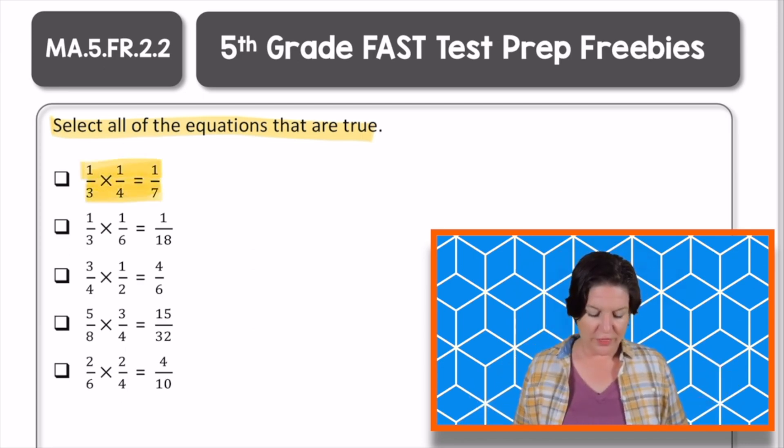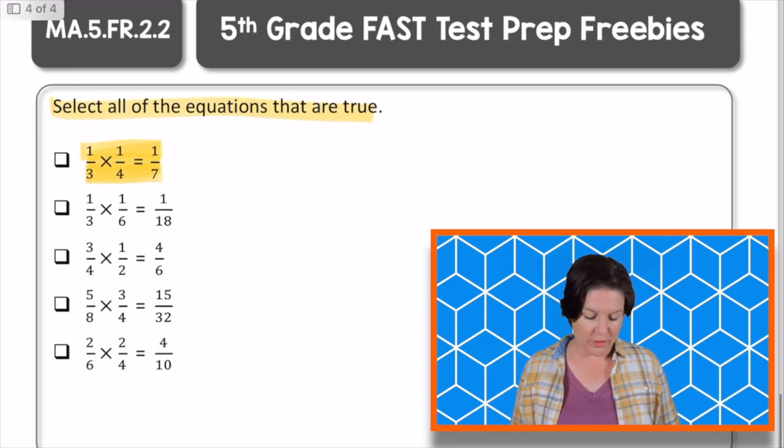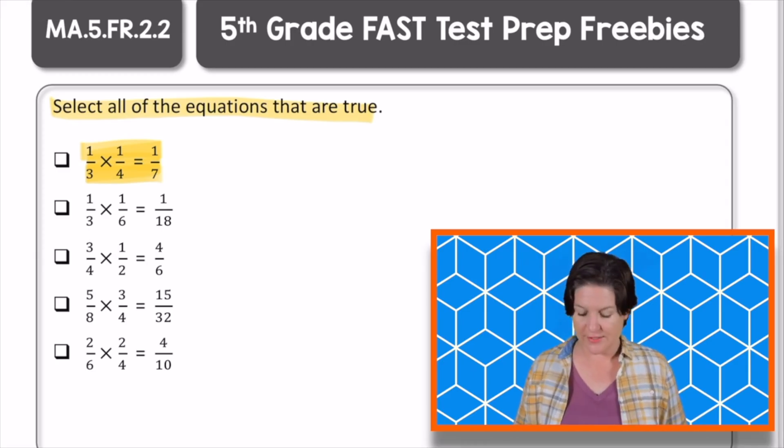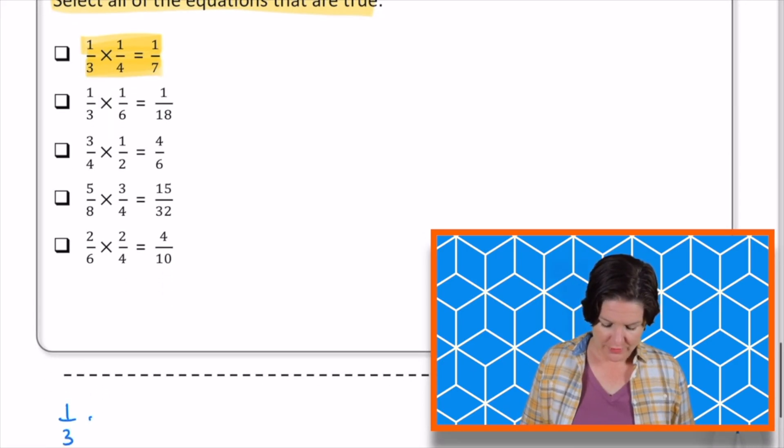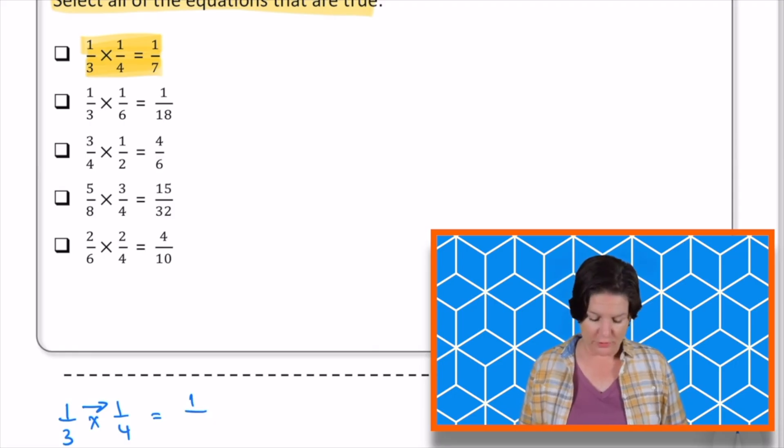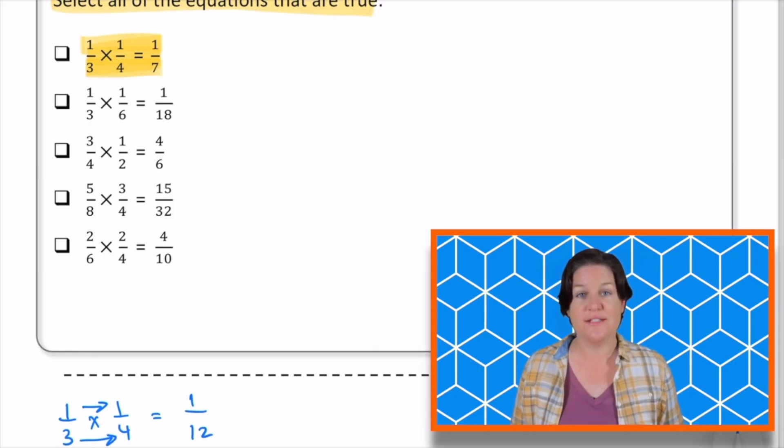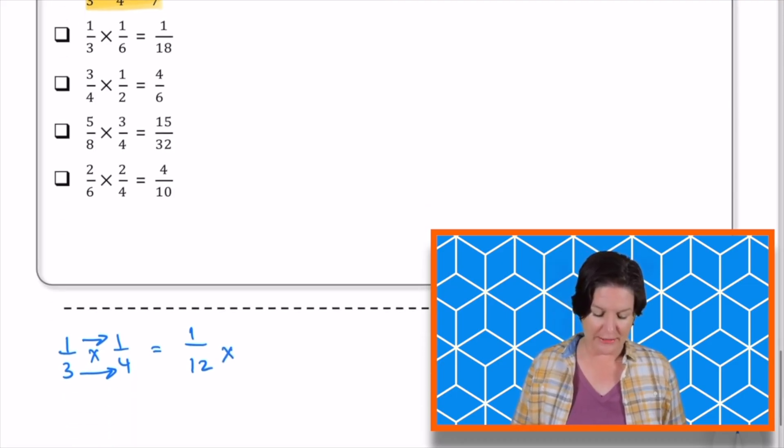All right, so this first one right here, it says 1/3 of 1/4. 1/3 times 1/4, is that 1/7? Well, I know that 1/3 times 1/4, if I'm multiplying across, 1 times 1 would be 1 in my numerator, and 3 times 4 would be 12 in the denominator. So we can go ahead and eliminate that one.